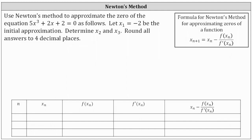We're asked to use Newton's method to approximate the zero of the equation five x cubed plus two x plus two equals zero. Let x one equal negative two be the initial approximation. Determine x two and x three. Round all answers to four decimal places.